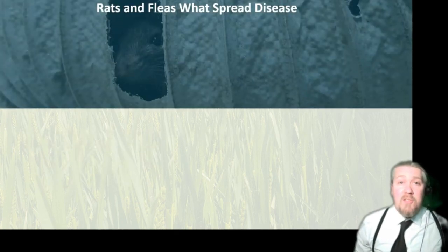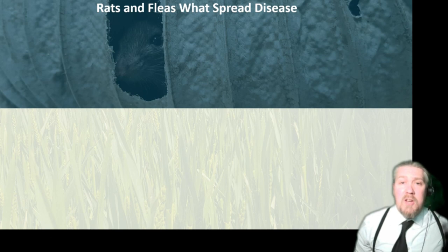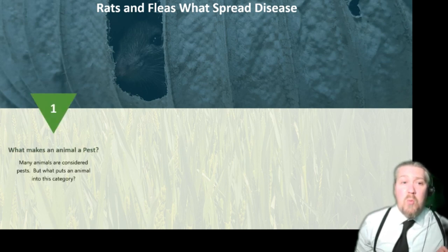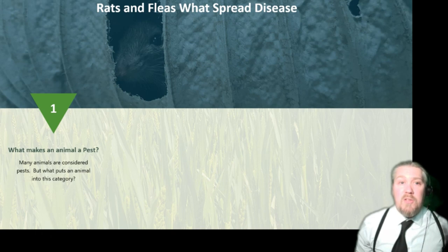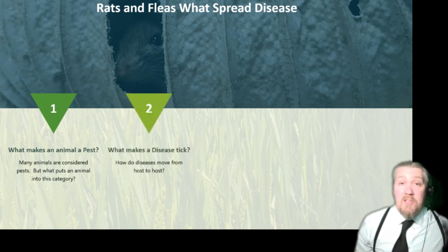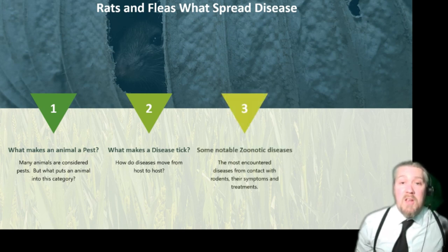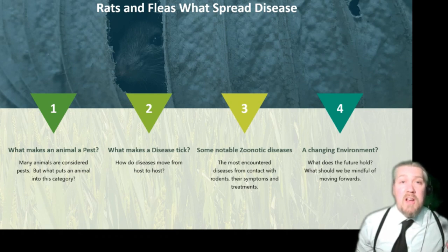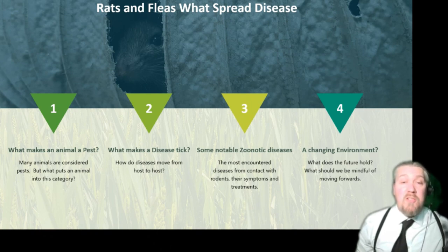Why you're listening to this is because you want to know about rats, fleas, and what spreads diseases. We're going to break today's talk into four major sections: firstly, what makes these animals pests — when does a rat become a pest? Then some of the diseases these animals carry. Then a look at notable zoonotic diseases — what they are, how we can contract them, their symptoms and treatments. And finally, a changing environment and how global or regional climates can affect these diseases.